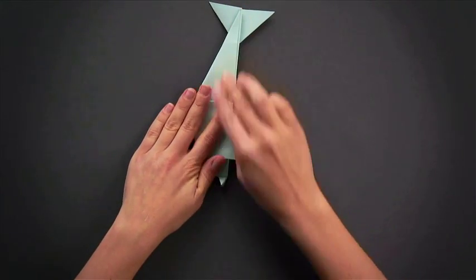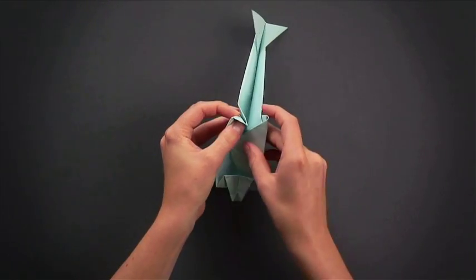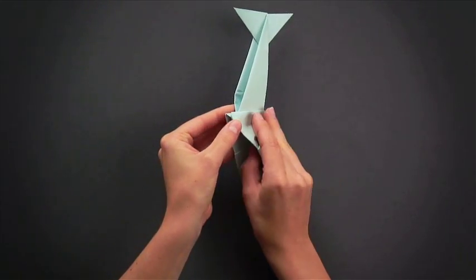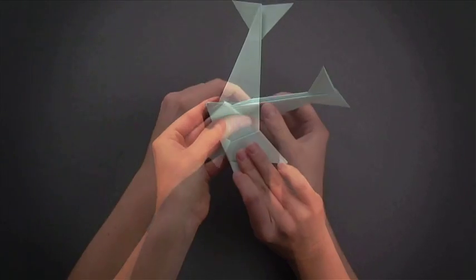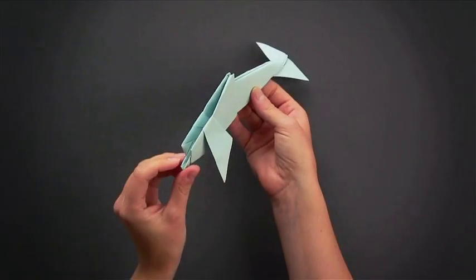Reinforce the folds that you have made by flattening out the model. You can then lock the model together by interlocking the different folds. Give the tail of the model a slight twist for effect and there you have your dolphin.